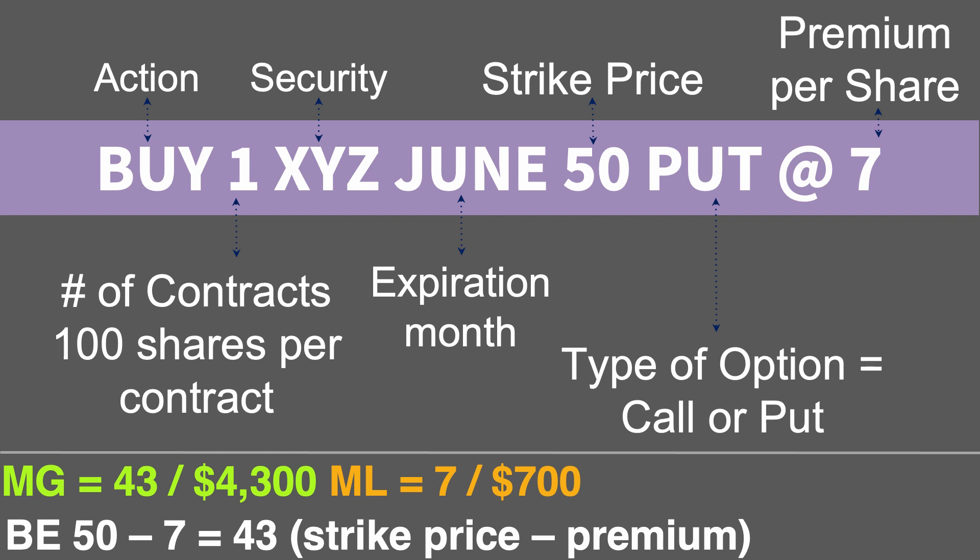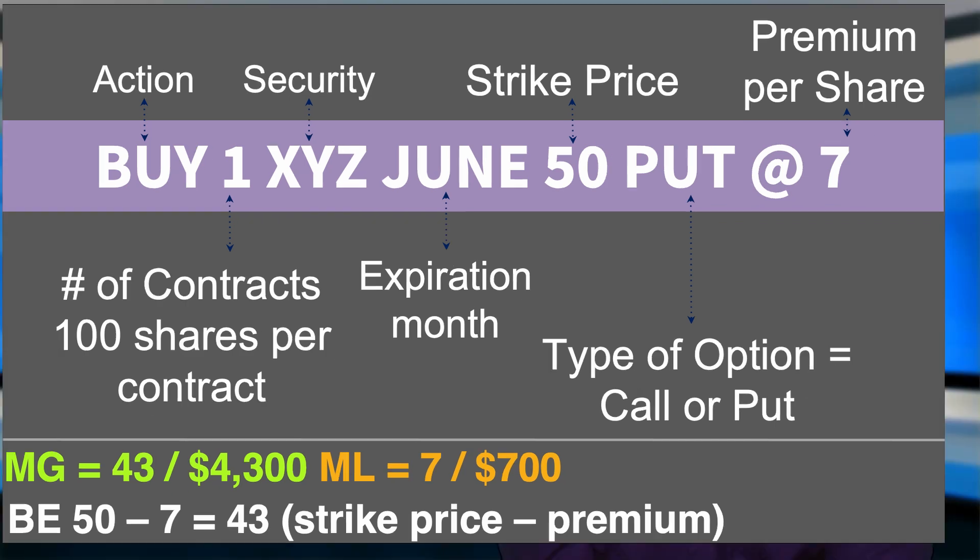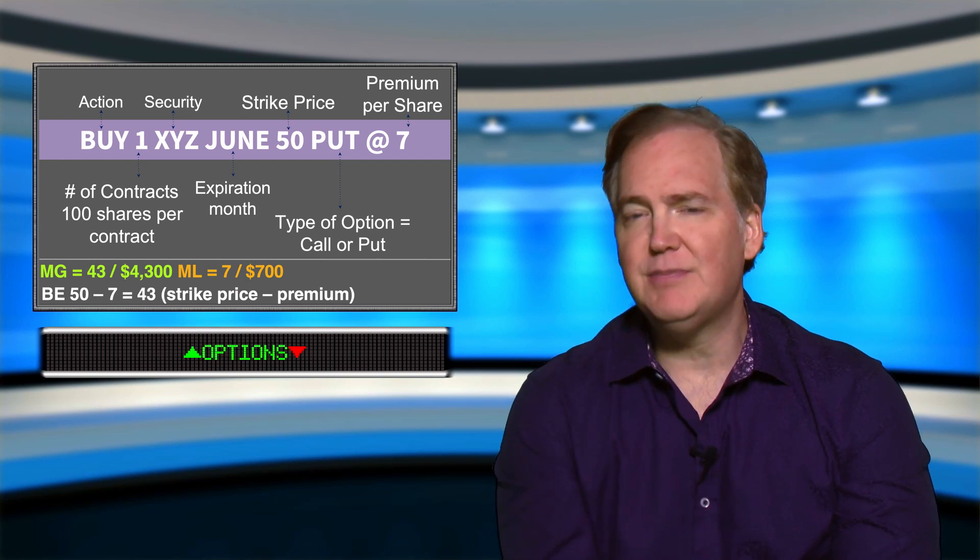Whenever you buy an option your maximum loss is always the premium you paid — here $700. Our maximum gain is not unlimited with a put because a stock may not fall below zero. To determine your maximum gain you must first determine your break even. To determine the break even on a put it is strike price minus the premium: $50 minus $7 gives us a break even of $43 per share.